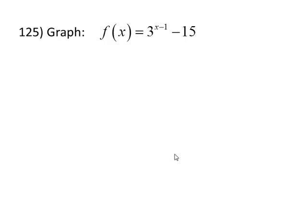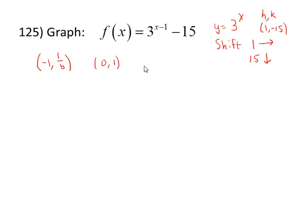The only problems we have left are a couple of graphing problems to take a look at. To graph f(x) equals 3^(x-1) minus 15, we're going to graph first the equation y equals 3^x and then we'll shift that 1 to the right and down by 15 because (h,k) in this problem is (1,-15). The graph of y equals 3^x will have three points that are of interest to us: (-1, 1/b), (0, 1), and (1, b). When the base is 3, that's (-1, 1/3), (0, 1), and (1, 3).